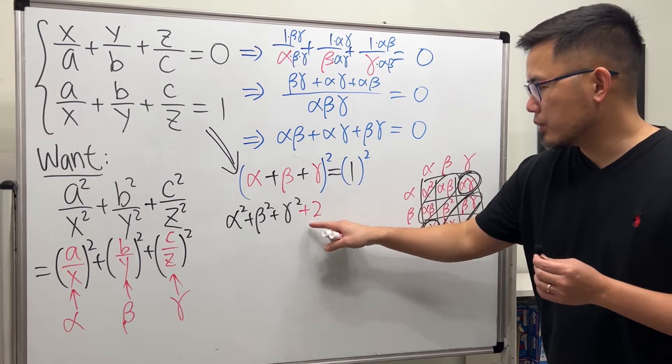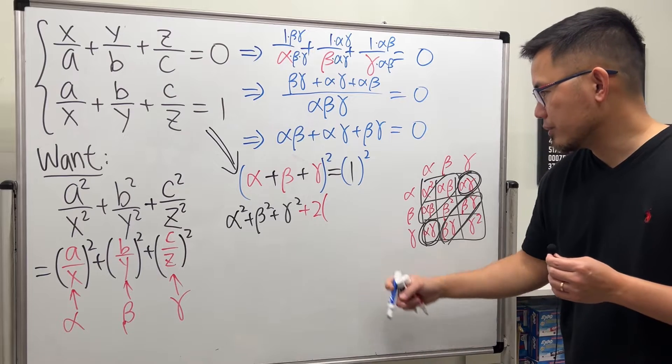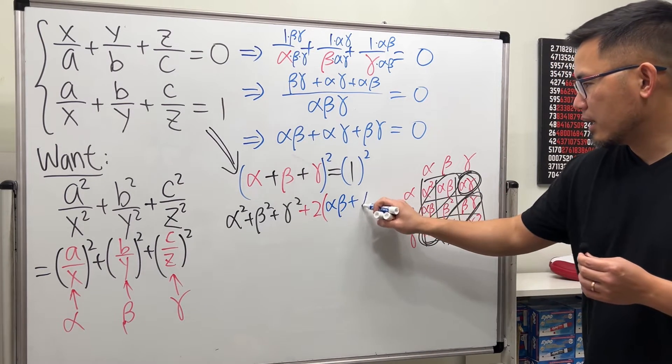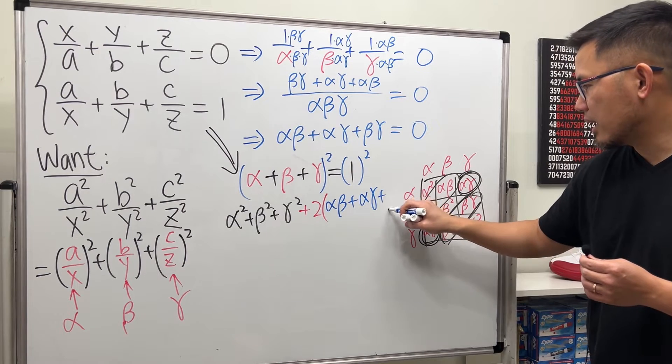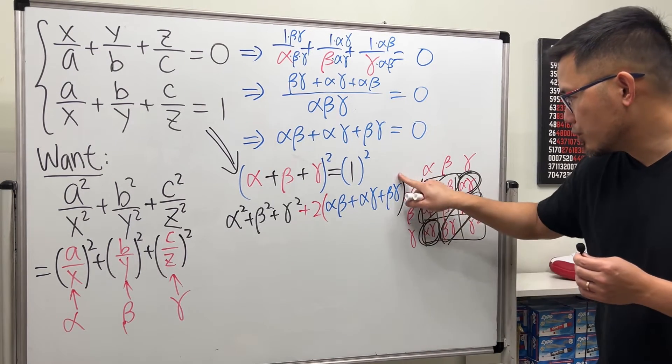I will put down two times alpha beta. I'll put this down in blue: alpha beta plus alpha gamma and lastly beta gamma.